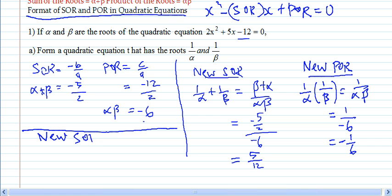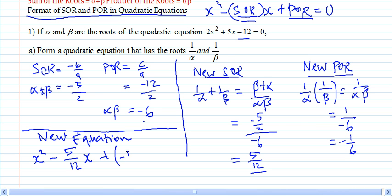So the new equation would be x squared minus, what's your new sum of the root? That's 5 over 12. So you put in 5 over 12x. You're just substituting it inside here. And then you do your product of the root. So plus, what's your product of the root? Negative 1 over 6. So put in your negative 1 over 6. That's equal to 0.